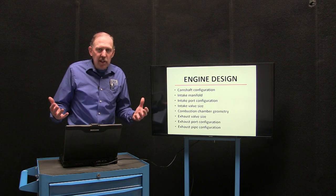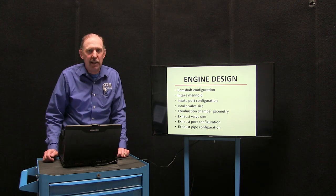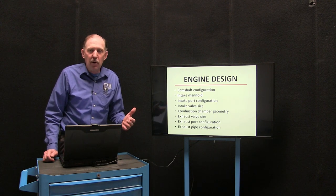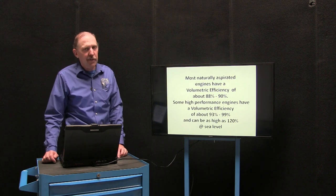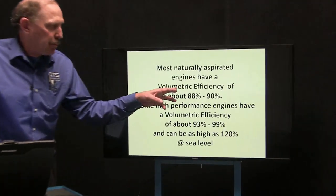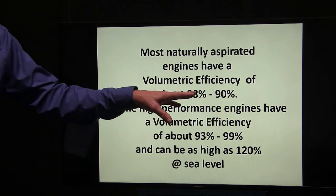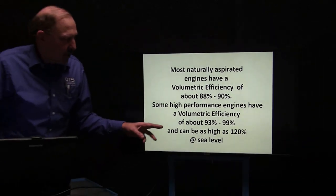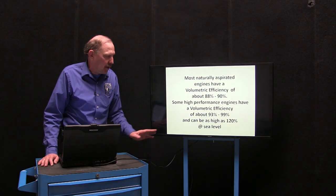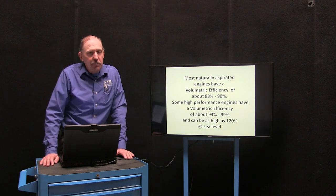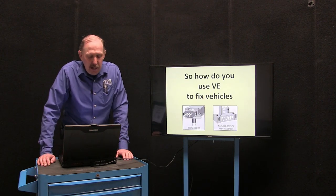If I have a BMW, I want my highest volumetric efficiency towards the max red line so I make the maximum amount of horsepower and torque — maybe four to seven thousand RPM. Each engine will be configured differently based on what the engineering team is trying to accomplish. Most naturally aspirated engines will have about 88 to 90 percent — that's a really common number. Some high-performance engines can have 93 to 99 percent, which is a really high amount. I have seen engines in production that can be as high as 120, and those are really rare. Most of the engines we work on are around the 90 percent range.